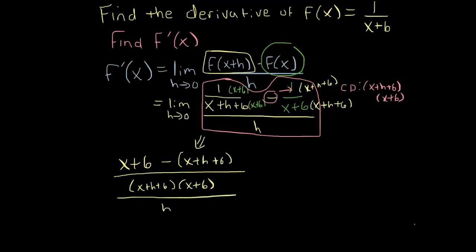And now if you distribute, you get x+6 minus x minus h minus 6 divided by (x+h+6)(x+6).